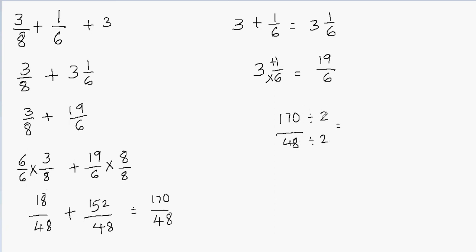So let's do that. 170 divided by 2 is 85, and 48 divided by 2 is 24. So we have 85 divided by 24. I think we cannot reduce it anymore, because 85 and 24 are not divisible by the same number. So this is going to be our final answer in fraction form.